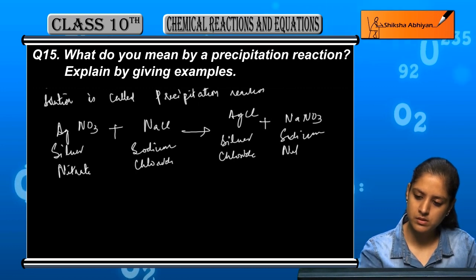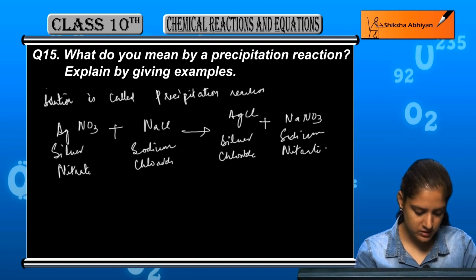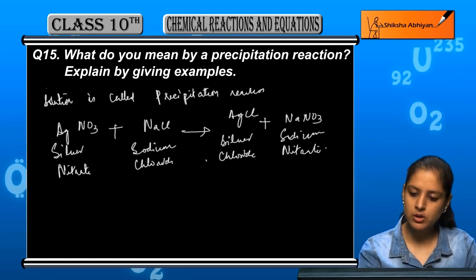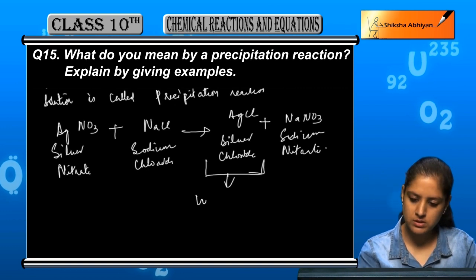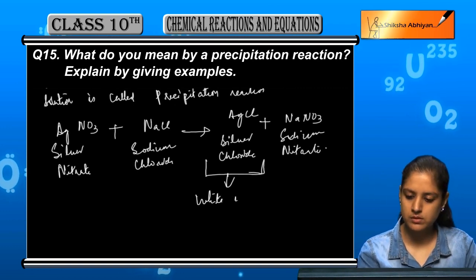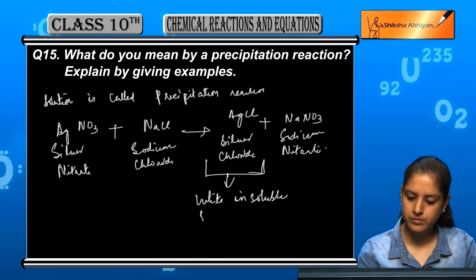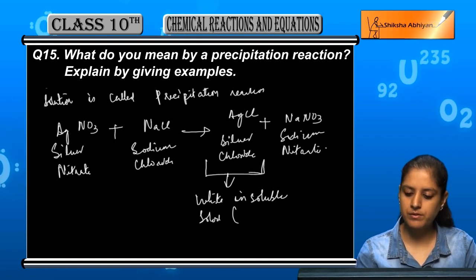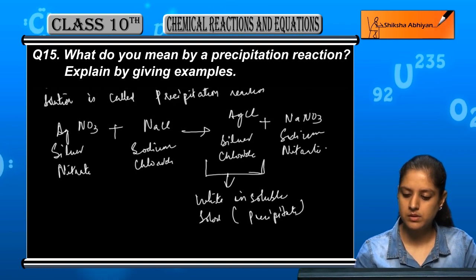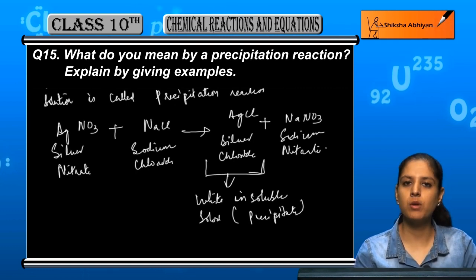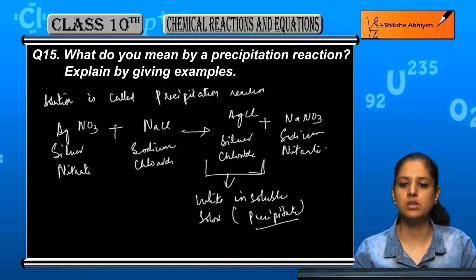Okay, this is the reaction. In this reaction, silver chloride is a white insoluble solid or precipitate. This is a precipitation reaction.